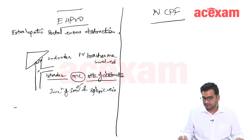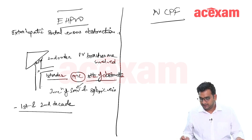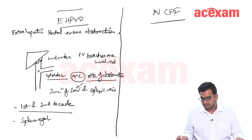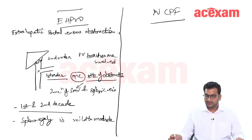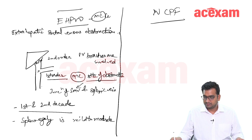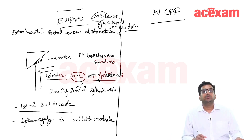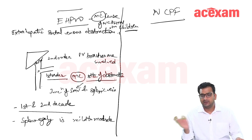EHPVO is generally seen in young patients of the first and second decade. Splenomegaly is mild to moderate and less pronounced compared to NCPF. EHPVO is the most common cause of non-cirrhotic portal hypertension and the most common cause of portal hypertension in children.